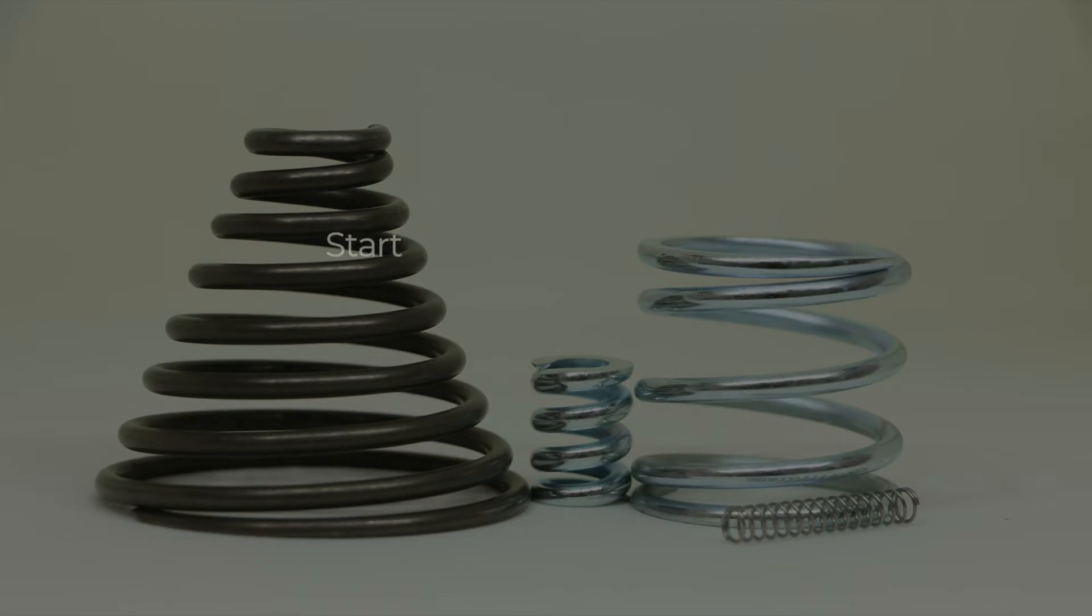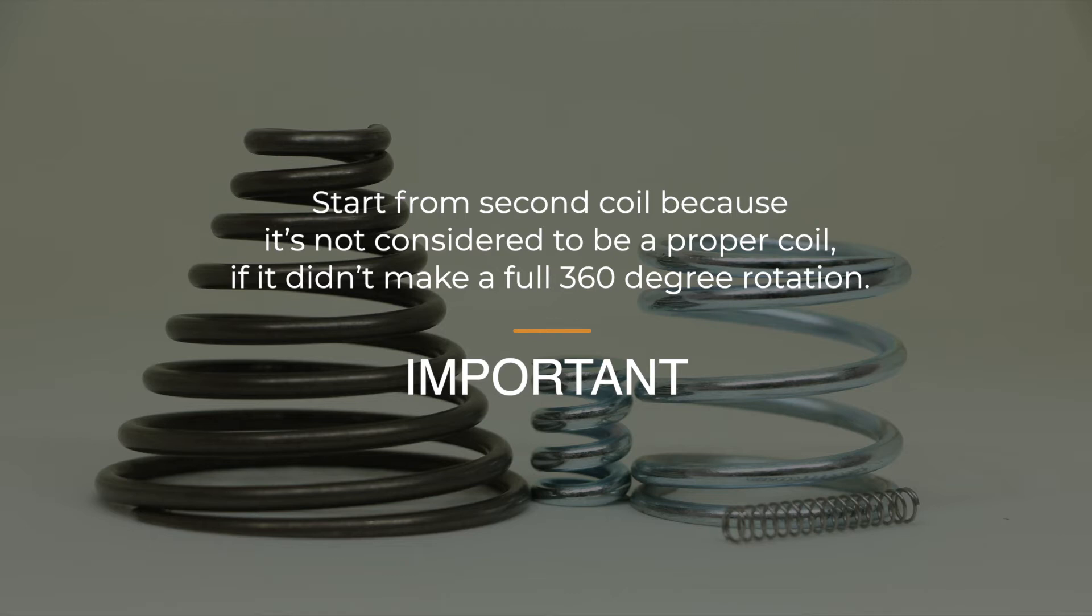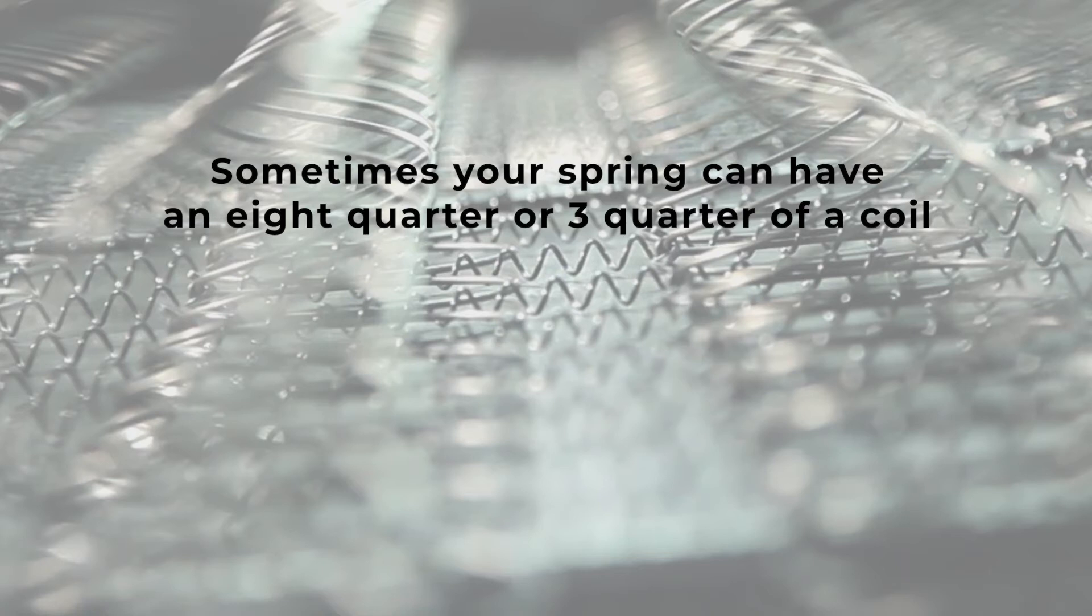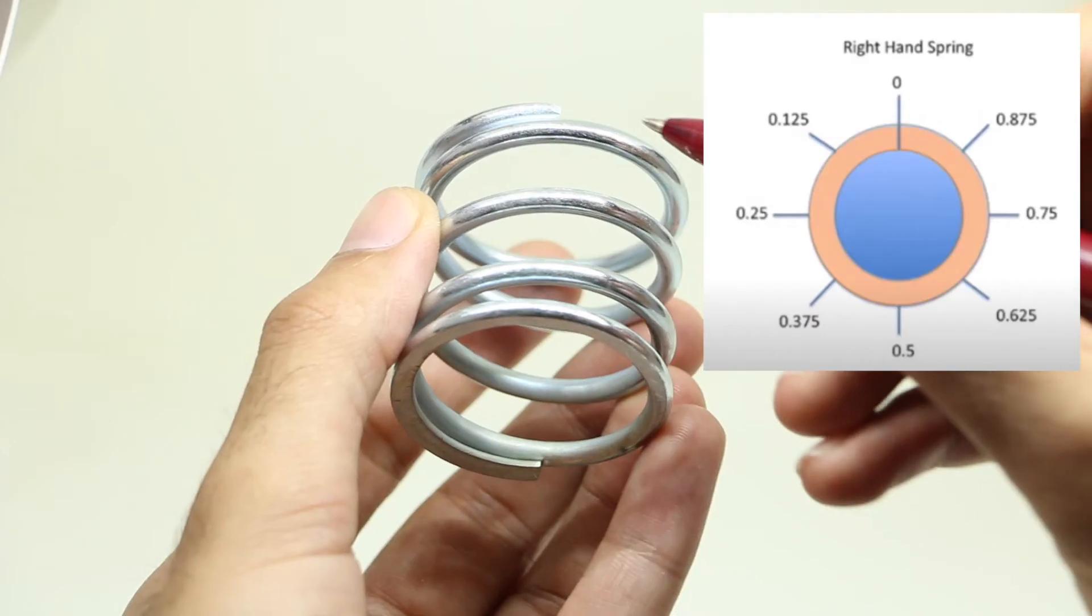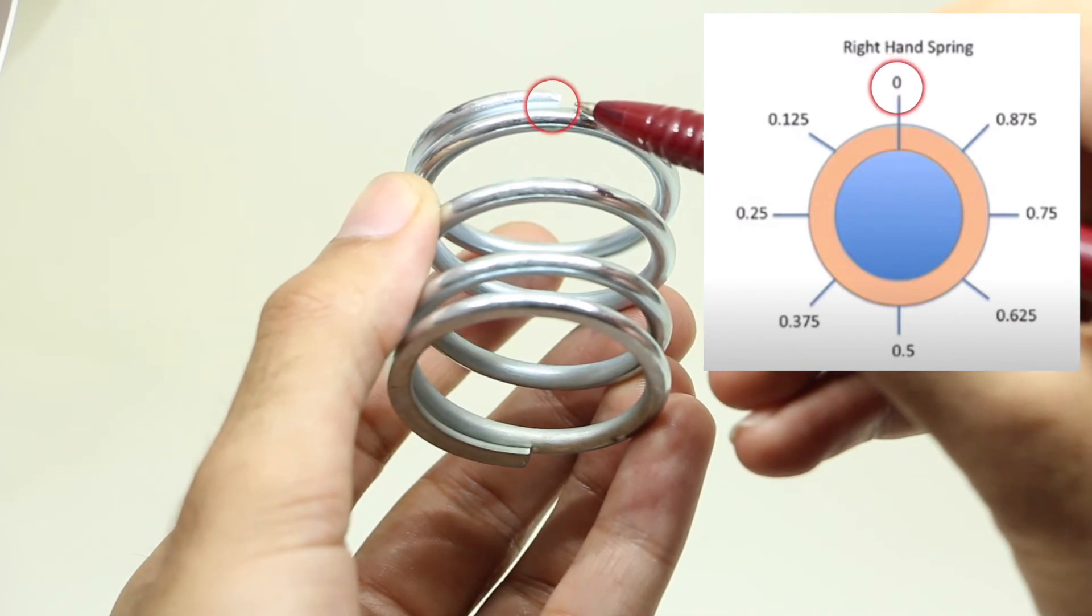Now time to count the number of coils. This is very important. Start from second coil because it's not considered to be a proper coil if it didn't make a full 360 degree rotation. Sometimes your spring can have a quarter of a coil or three quarters of a coil. And to determine the exact measurement of the spring we've designed this diagram to help you. While holding the spring, ensure that the spring is at high noon or zero on the diagram and count all the quarter, half, or three quarter coils at the end of your spring.